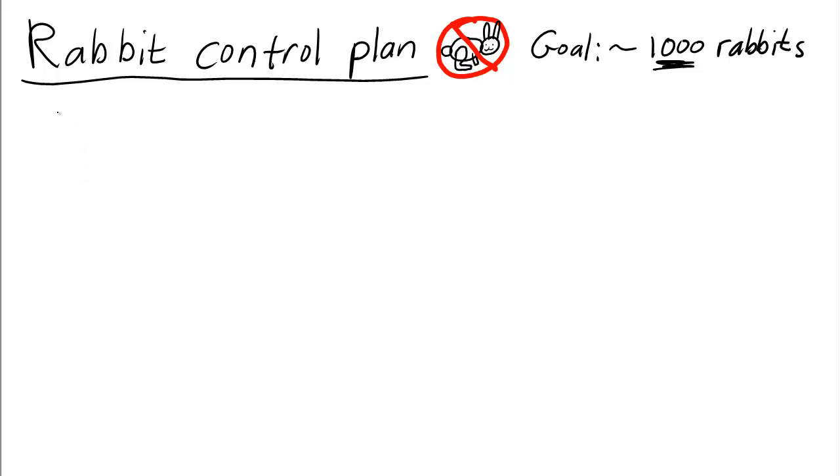Okay, let's see if we can come up with a good plan for controlling these rabbits. We could let p be the number of rabbits in each month, in month t.